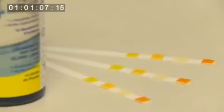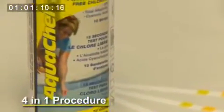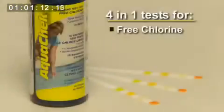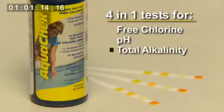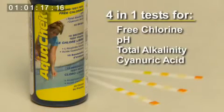Also included in the salt kit is the second test strip, AquaCheck Yellow 4-in-1, for free chlorine, pH, total alkalinity, and cyanuric acid. These are the other critical tests for maintaining a saltwater pool.